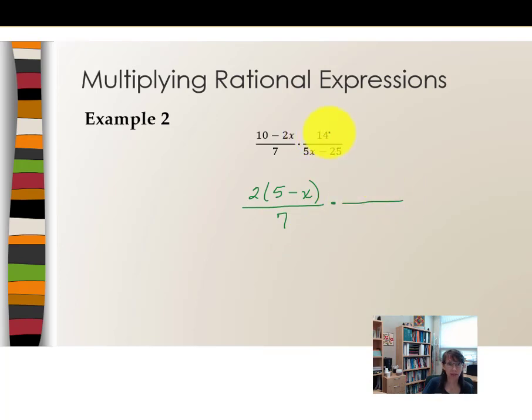14, however, is 2 times 7, so I might want to write it that way. Do you see any reason why I would consider writing it in its factored form? Eventually 7 is going to be reduced, but I won't do that at the moment. The denominator, 5x minus 25, has 5 as the greatest common factor, leaving x minus 5.